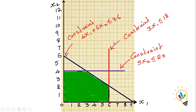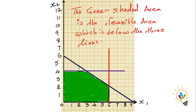All three constraints are less than or equal to type, so for every line the area below the line should be considered. The common area shared below all three lines is the feasible region, shown as the green shaded area on the graph.